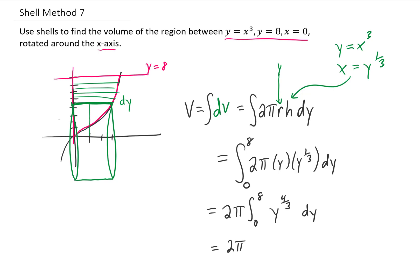Integrating means adding one to this power. That's going to be y to the 7/3, and we're going to divide by that power, which is the same thing as multiplying by 3/7. Then we're going to evaluate from zero to eight, and we'll be finished.